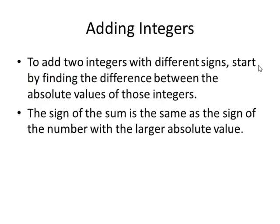If we add two integers that have different signs, we start by finding the difference between the absolute values of those integers. The sign of the sum is the same as the sign of the number that has the larger absolute value. A key idea: when the two numbers have the same sign, you find the sum — same sign, same sum. When two numbers have different signs, you find the difference in the absolute values — different signs, difference.